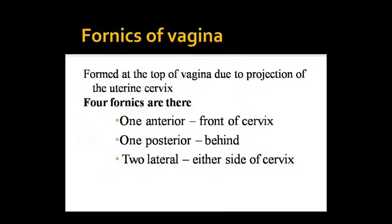The upper part of the vagina is called the vaginal fornix. The uterine cervix projects into the vaginal vault, forming what we call the vaginal fornix. There are four fornices: one anterior, one posterior, and two lateral fornices.